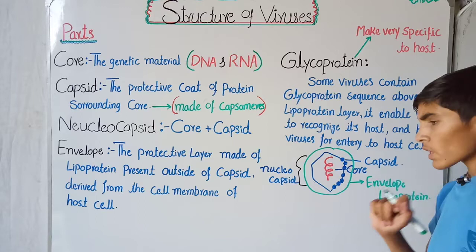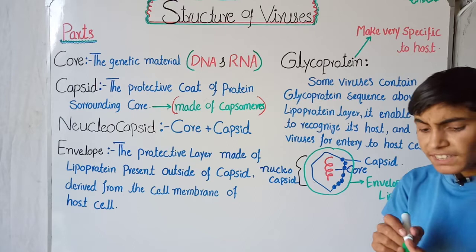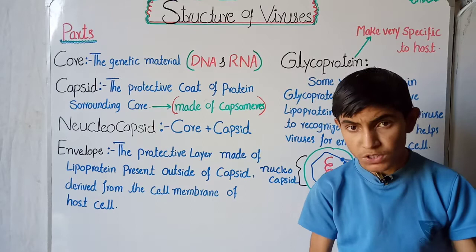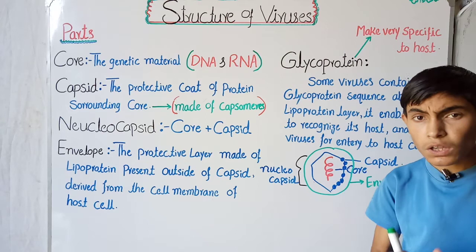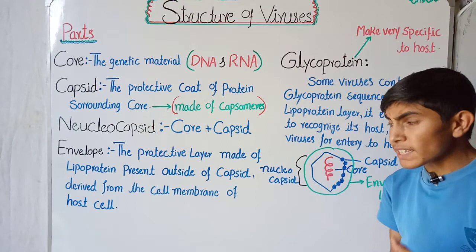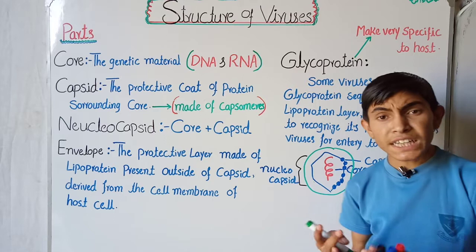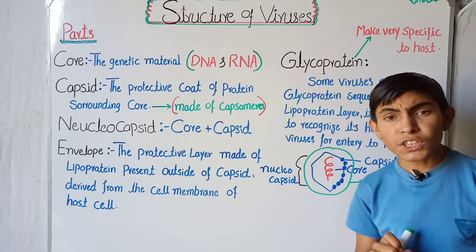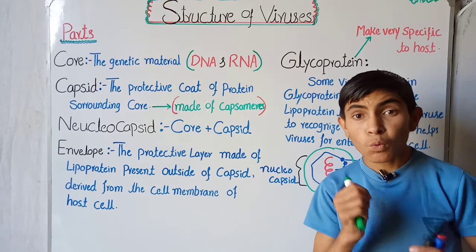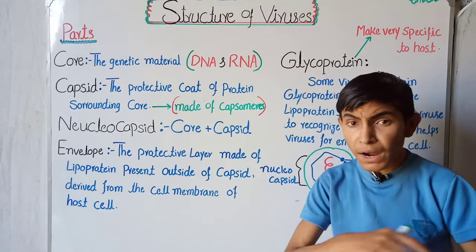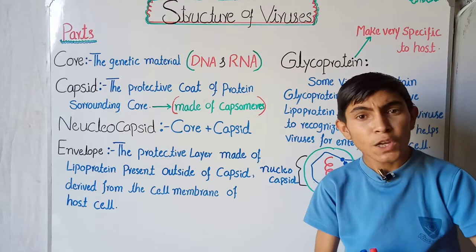This lipoprotein envelope is derived from the cell membrane of the host cell. When a virus enters the living host cell and comes out again, it surrounds itself in the cell membrane of that host cell. This is very important because the lipoprotein cover helps the virus protect itself from being engulfed by white blood cells, since our immune system does not kill our own body cells.